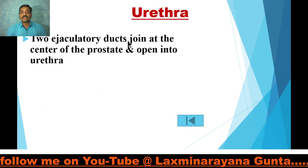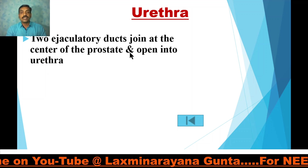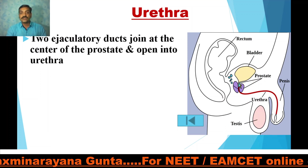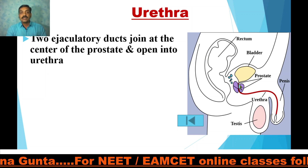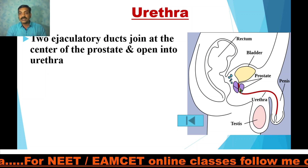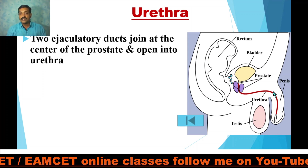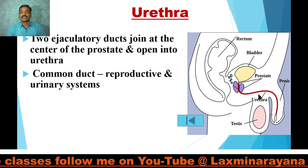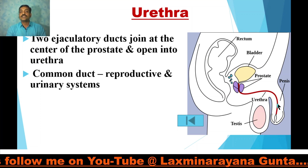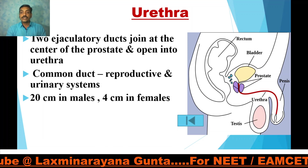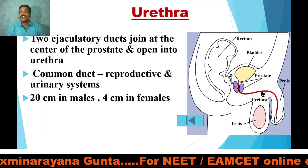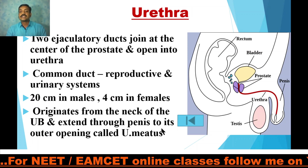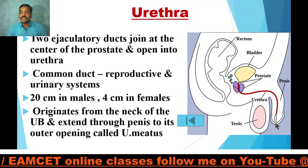The two ejaculatory ducts join at the center of the prostate and open into the urethra. The urethra is a common, shared duct for both the reproductive and urinary systems. It is 20 centimeters in males and 4 centimeters in females. The urethra originates from the neck of the urinary bladder, extends through the penis, and opens to the outside through the urethral meatus.